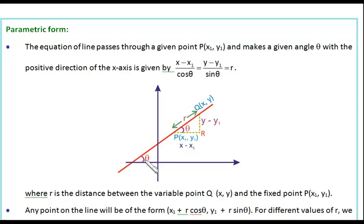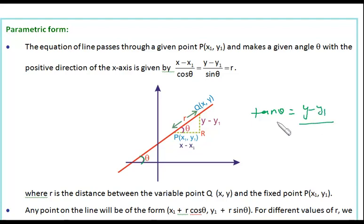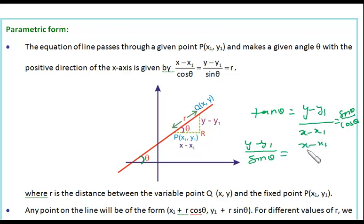This is the angle that this line makes with the x-axis — this angle is theta, and since this line is parallel to this line, this angle will also be theta. Now, tan theta equals perpendicular by base, so perpendicular is y minus y1 and base is x minus x1. Alternatively, tan theta can be written as sin theta by cos theta, giving us (y minus y1) by sin theta equals (x minus x1) by cos theta. Now, r is the distance between these two points; the distance formula gives r² = (x minus x1)² plus (y minus y1)².